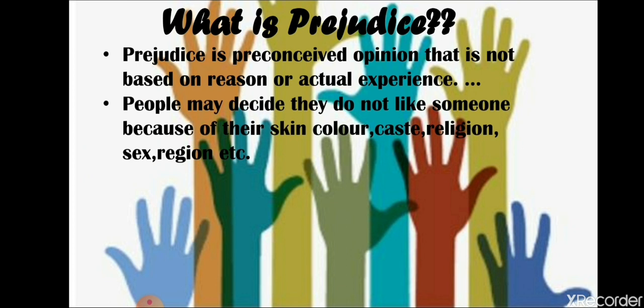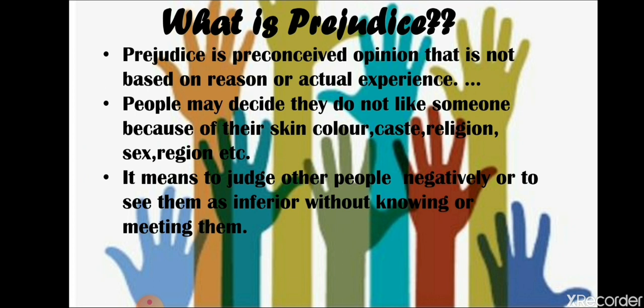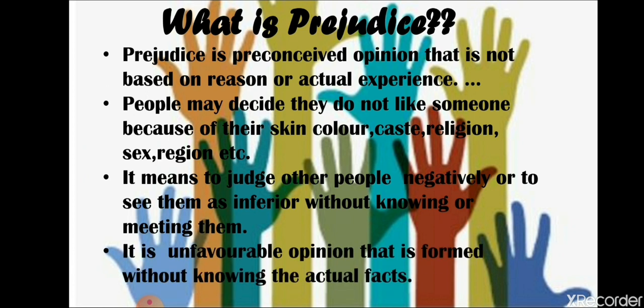We can be prejudiced about many things: people's religious beliefs, the color of their skin, the region they come from, the accent they speak in. In any way that another person is different from us, we can make prejudgments regarding that person. It means to judge other people negatively or to see them as inferior without knowing or meeting them — it is an unfavorable opinion formed without knowing the actual facts.